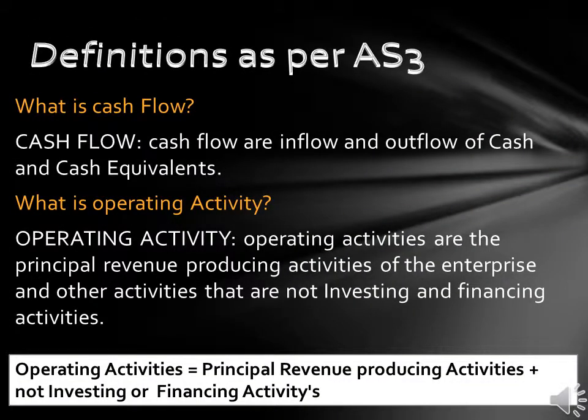What is cash flow? Cash flows are inflows and outflows of cash and cash equivalents. What is operating activity? Operating activities are the principal revenue-producing activities of the enterprise and other activities that are not investing and financing activities. So: Operating Activities = Principal revenue-producing activities + Not investing or financing activities.